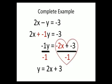And you end up with your answer is y is equal to 2x plus 3. That's negative 2x divided by negative 1 is 2x plus negative 3 divided by negative 1 is positive 3. And that is how you isolate y.